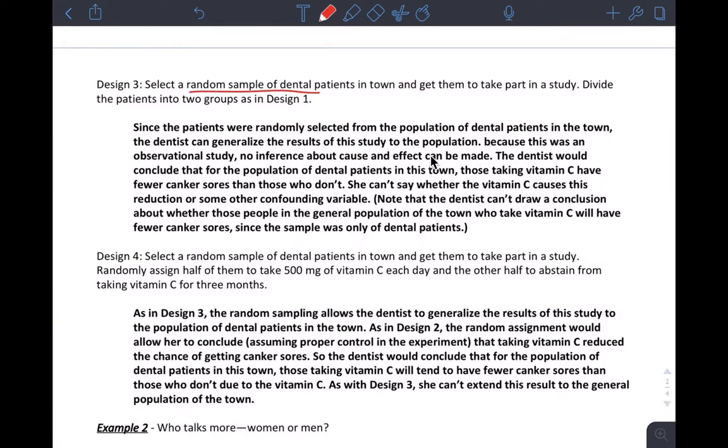And then in scenario three, random sample of dental patients were selected, and then I divide them into two groups. So this is a bit of a weird situation. So I randomly select patients from the population. I can generalize the results of my study to the population. So in general, I can say I'm expecting that if people already eat vitamin C, they may have less canker sores. But that doesn't mean that there's a causation established. So I can just say there might be some association, but it's not causation at all. And I can say that if the association exists in my sample, it might exist in the population.